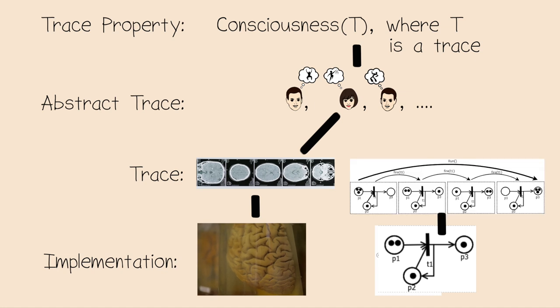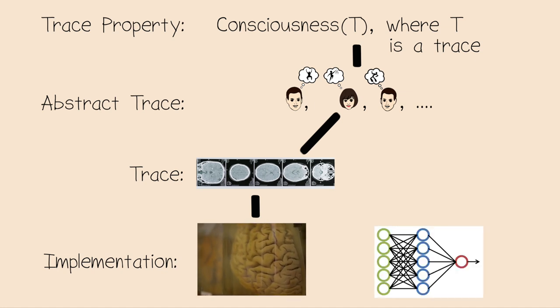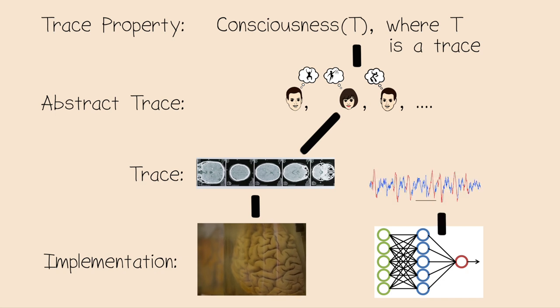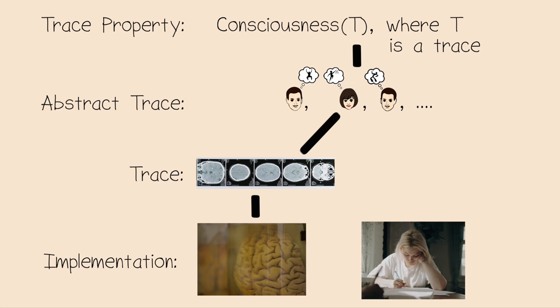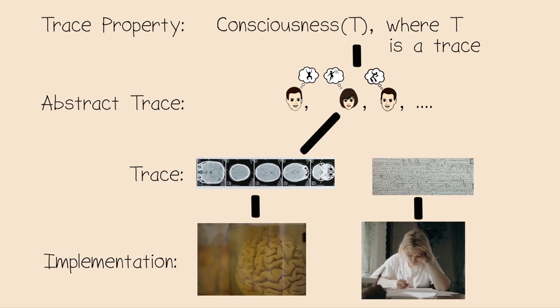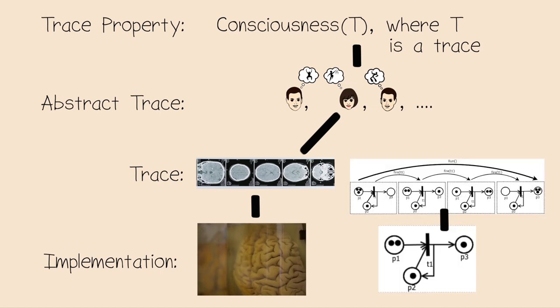In a Petri net, states are the molecules at a given time. In a neural network, states are the activations at a given execution step. And in the student running a program, it is a state he has written with a pencil on a piece of paper. The only thing I need to provide is a translation mechanism from states in the trace of the implementation to states of consciousness.